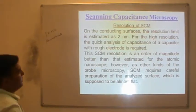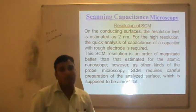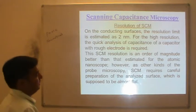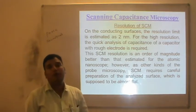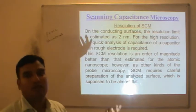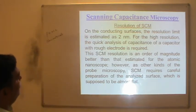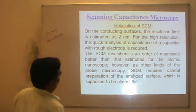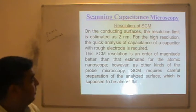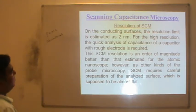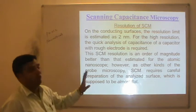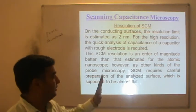Regarding the resolution of SCM — the most important parameter for any type of microscopy: in case of DFM the resolution is approximately 0.5 nm. For scanning capacitance microscopy, it is estimated at approximately 2 nm, but it is possible to achieve lower resolution. For high resolution, quick analysis of capacitance with rough electrodes is required, and that is possible to achieve.